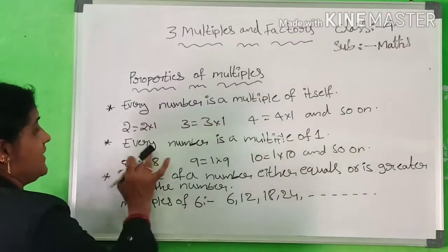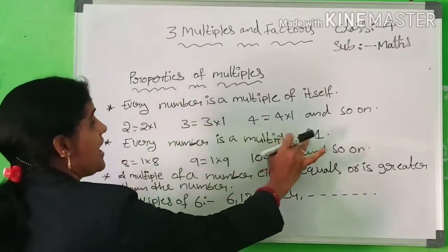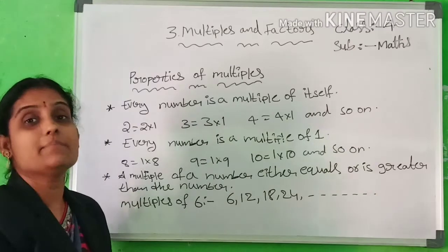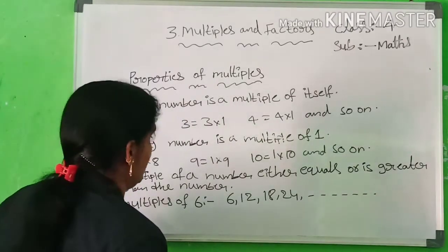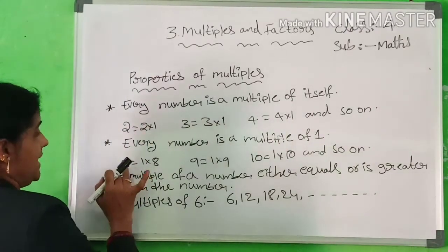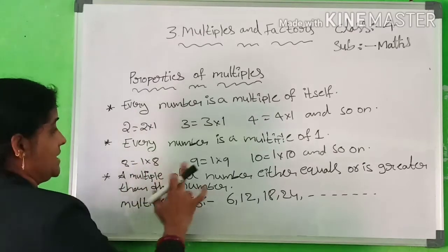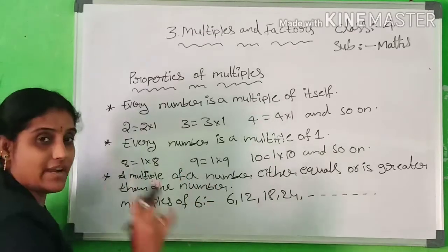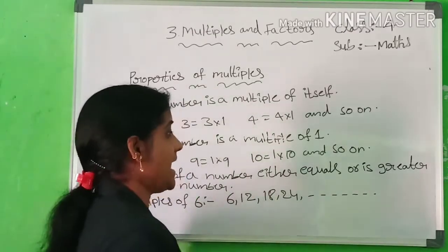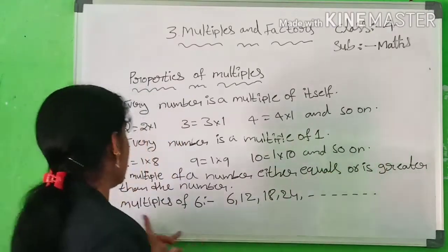Second property: every number is a multiple of 1. For example, 8 = 1×8, 9 = 1×9, 10 = 1×10, and so on.